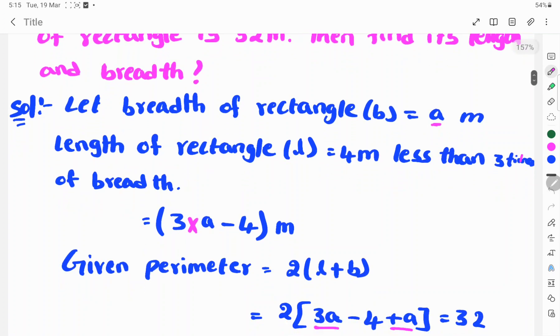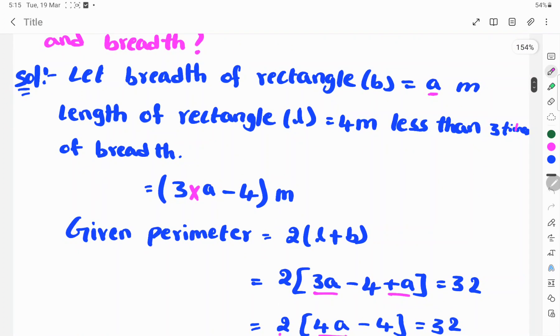Given perimeter, the perimeter of a rectangle is 2 into L plus B. So, 2 into L is 3A minus 4, plus B. Breadth is A, equals 32.